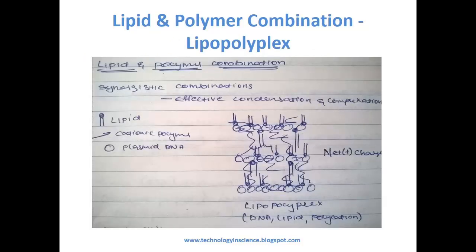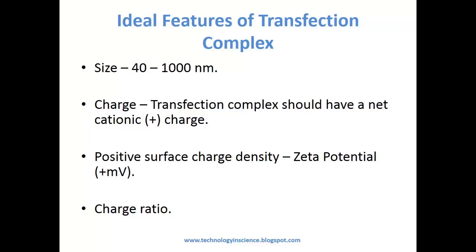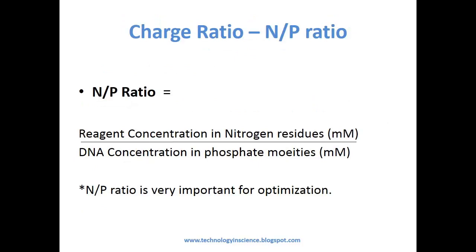Ideal features of a transfection complex: Size should be 40 to 1000 nanometers. Charge — the transfection complex should have a net positive charge and a positive surface charge density. Charge ratio: the N/P ratio equals reagent concentration in nitrogen residues divided by DNA concentration in phosphate moieties. The N/P ratio is very important for optimization.